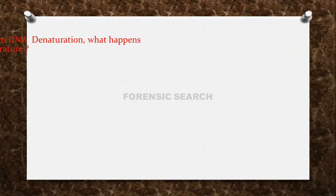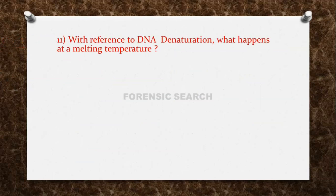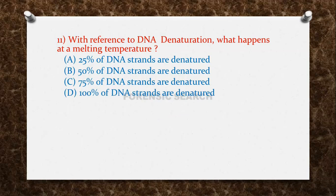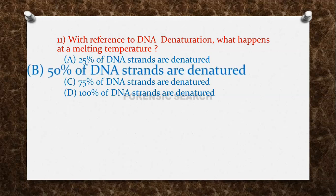The next question: with reference to DNA denaturation, what happens at melting temperature? Option A: 25% of DNA strands are denatured. Option B: 50% of DNA strands are denatured. Option C: 75% of DNA strands are denatured. Option D: 100% of DNA strands are denatured. The correct answer is option B — 50% of DNA strands are denatured at melting temperature.